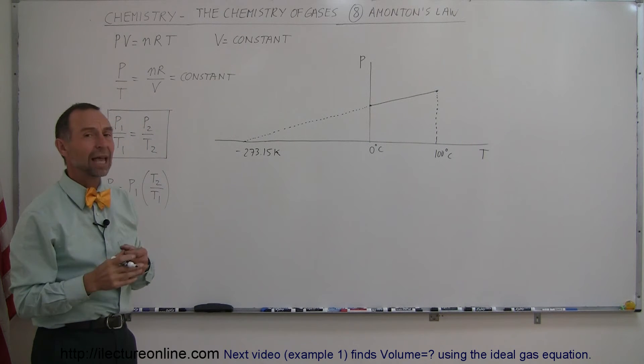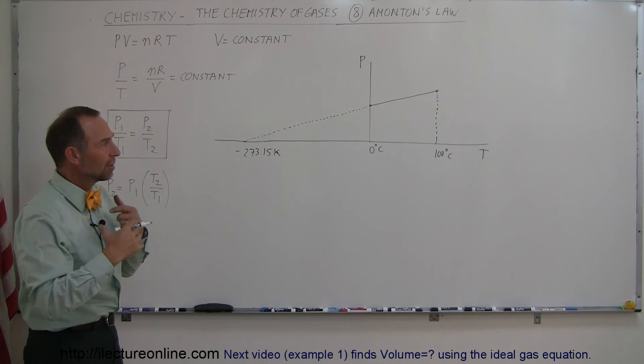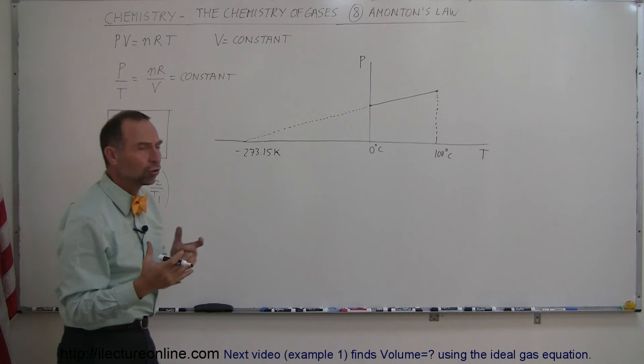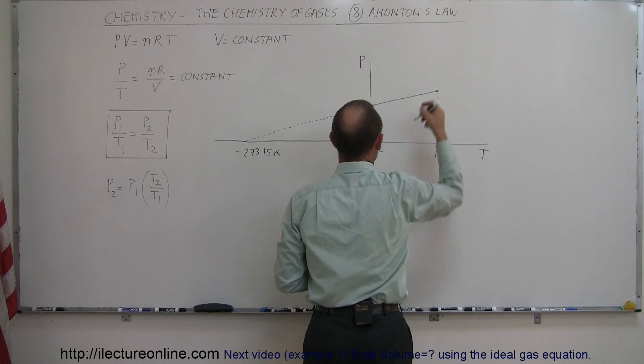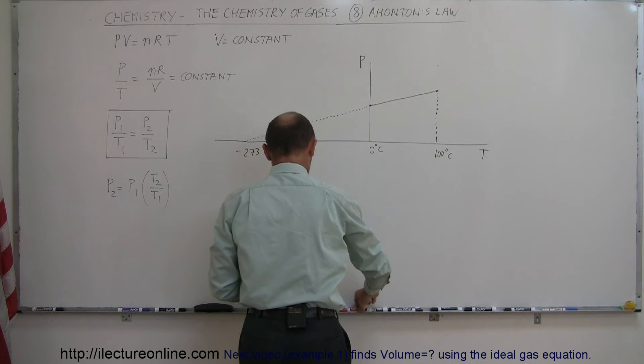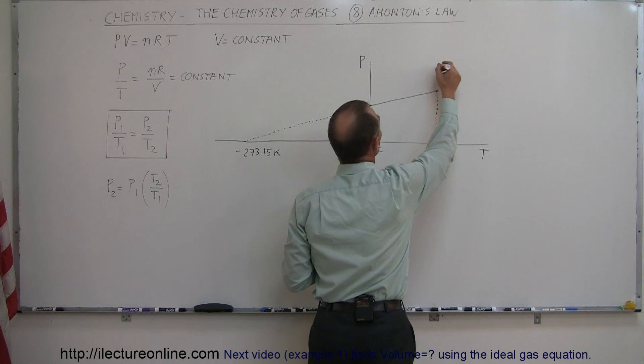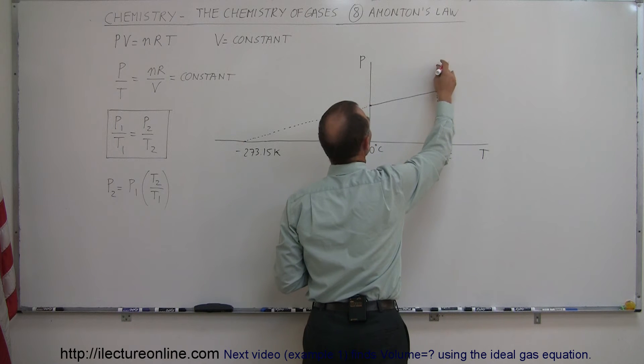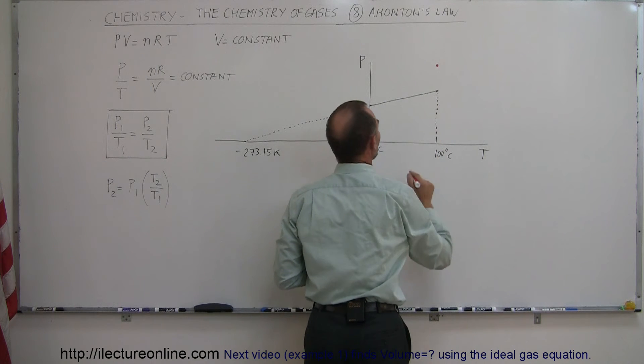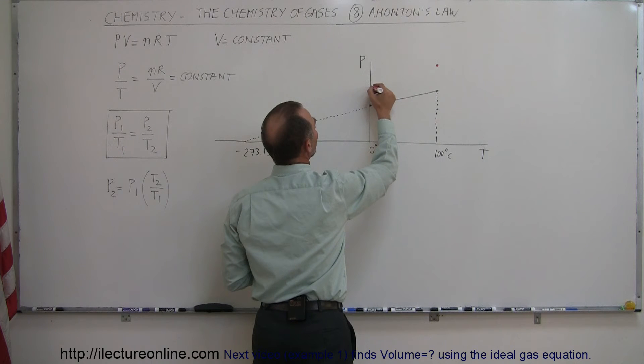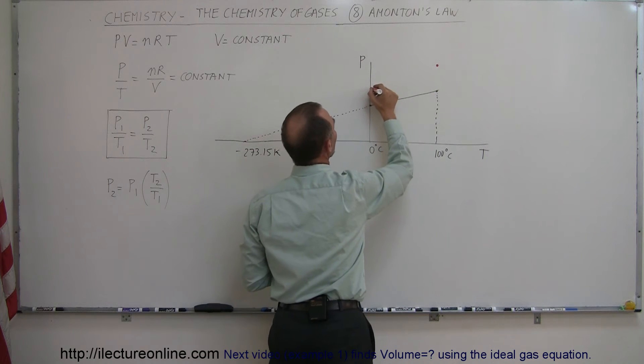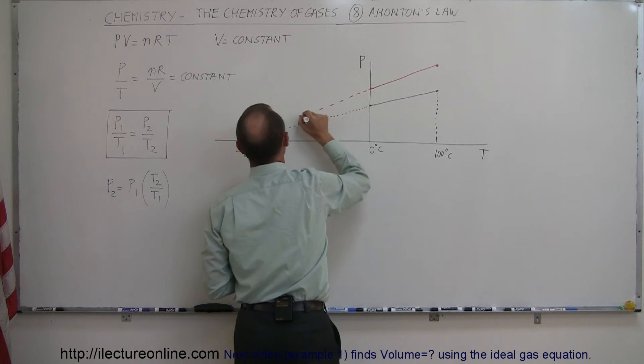What if they changed the volume of the gas? They took the same volume, made it smaller, so the pressure would be greater. If we measured at 100 degrees centigrade and then measured again at 0 degrees centigrade, the pressure would be somewhere down here. If we connected those two lines and extrapolated that through,